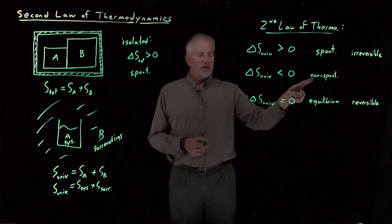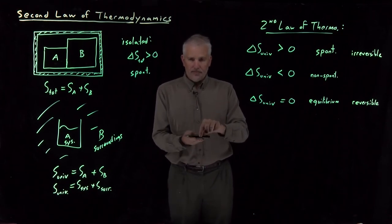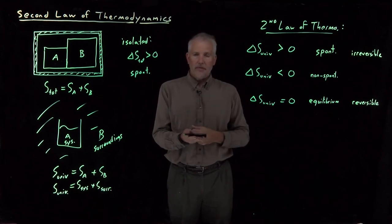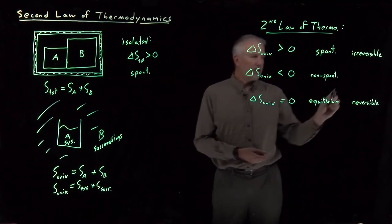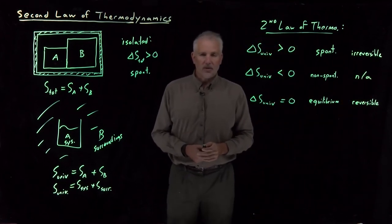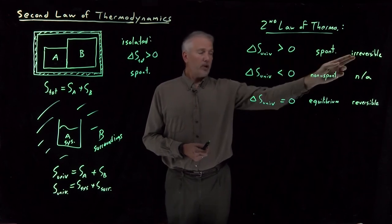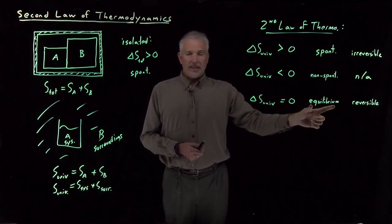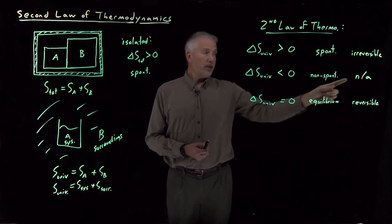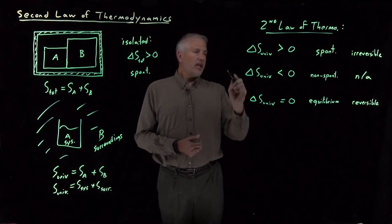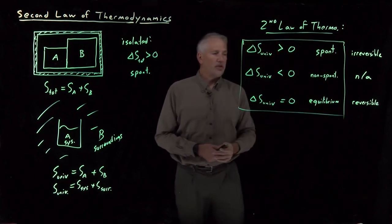That leaves the question: how do we describe what happens for a non-spontaneous process — would that be reversible or irreversible? That would be a little like asking if I set this marker on the ground and watch it raise itself up against gravity, would that be irreversible or reversible? That's kind of a nonsense question. If a process is non-spontaneous, it's not going to happen at all, so it doesn't make sense to ask whether it happens reversibly or irreversibly. If the entropy change is zero and the process is in equilibrium, that can happen reversibly; when it's not spontaneous, it's pointless to ask.